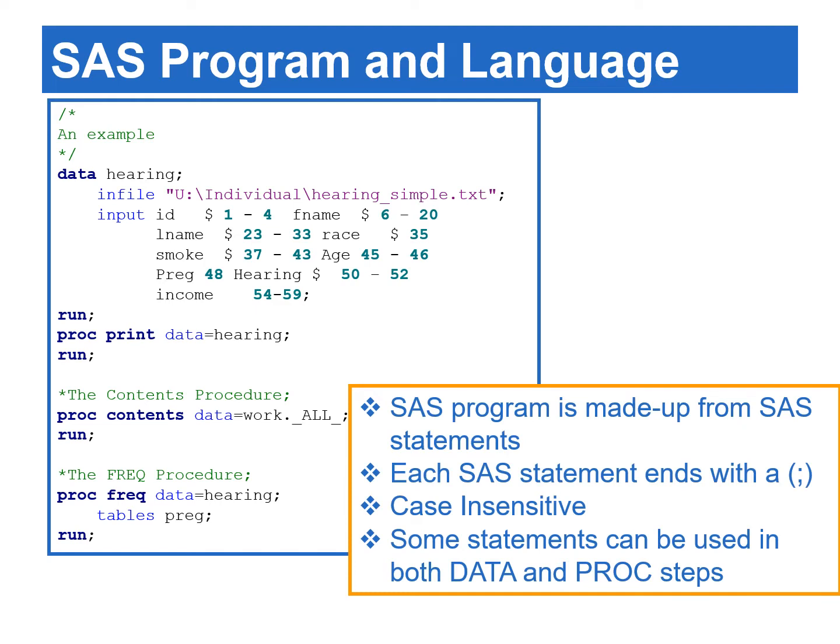The building blocks of the data and PROC steps are statements. A statement is made up of a series of elements, such as names, operators, operands, etc. Each statement must end with a semicolon. The statements in the data step serve as an instruction to read data, create a new data set, or perform data manipulation. Statements in the PROC step are used to analyze data or create reports.